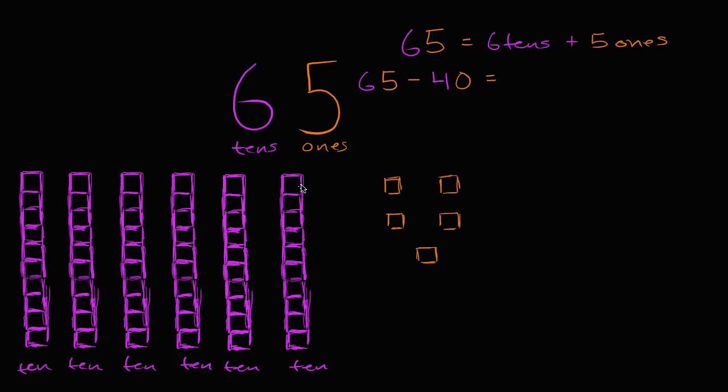So let's subtract four tens from here. So let's subtract one, two, three, four. So I took away four of the tens. So how many tens do I have left over? Well, I have left over two tens. So this is going to be equal to two tens.